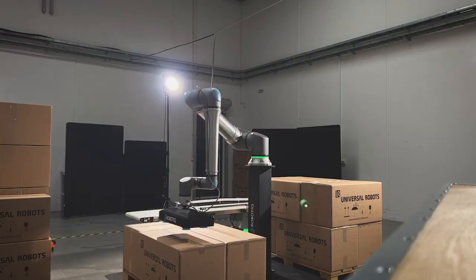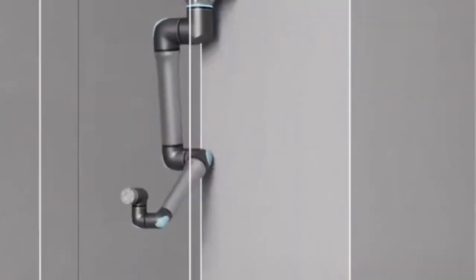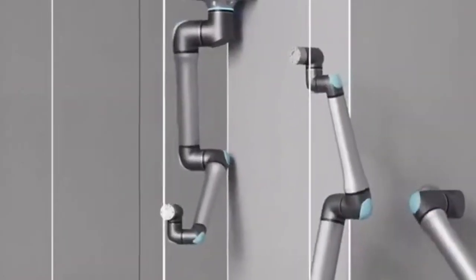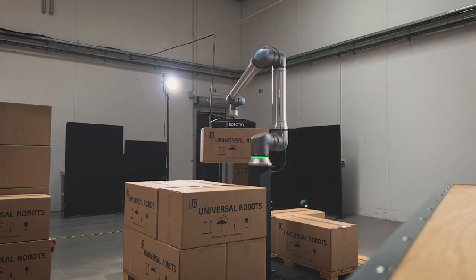In addition to palletizing, Universal Robots expects the UR-20 to be used for welding, material handling, machine loading, and machine tending, as well as for innovative solutions created by its extensive partner ecosystem.